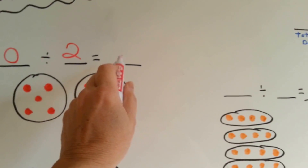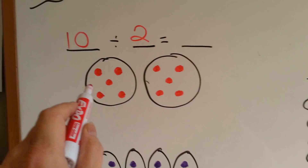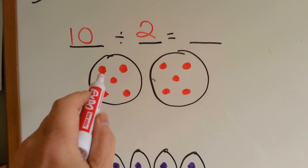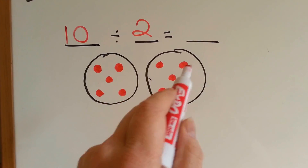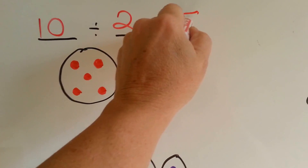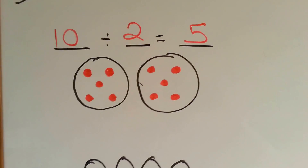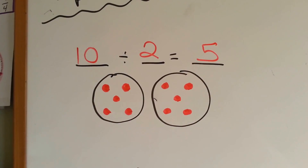And in this last line here, how many are in each group? 1, 2, 3, 4, 5. 1, 2, 3, 4, 5. 10 divided by 2 equals 5.